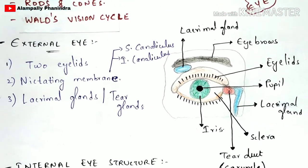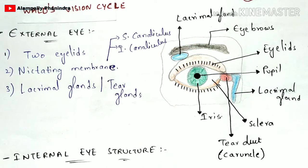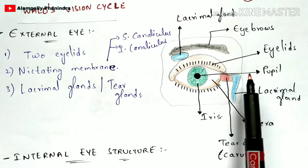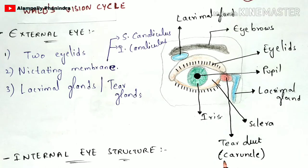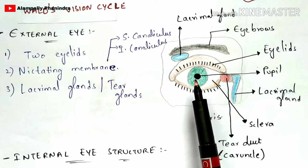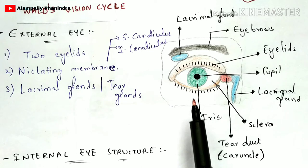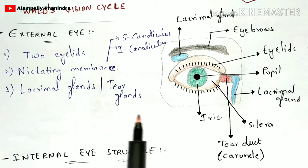If you see the diagram here, this is the external structure of the eye. Its parts include the lacrimal gland, eyebrows, and eyelids. The black dot at the center region is called the pupil. At the corner of the eye you can see a red ball-like structure called the caruncle, commonly known as the tear duct. The white region is called the sclera, and the green-colored region — drawn in green for better understanding, but normally black — is known as the iris.